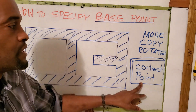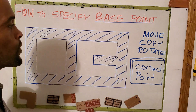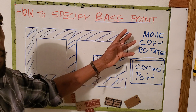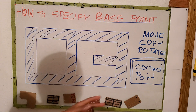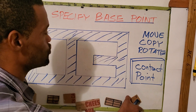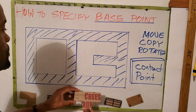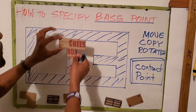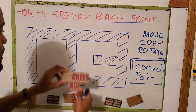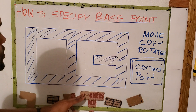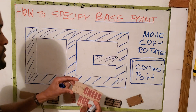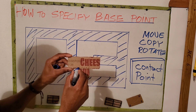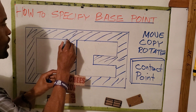So what is a base point? A base point is basically a contact point — a point at which we choose to align with some other snappable point on the drawing. For example, if I wish to move this T-stiffener here into this spot right here, a suitable base point would be here at this point, because this point could snap onto that point.